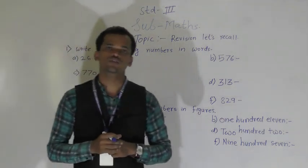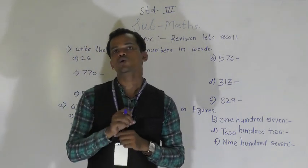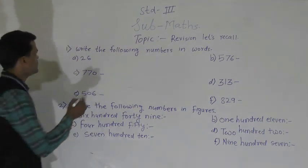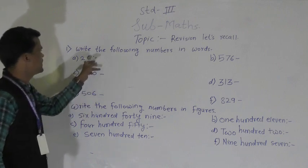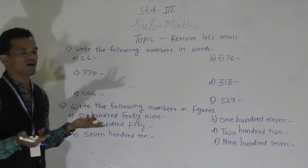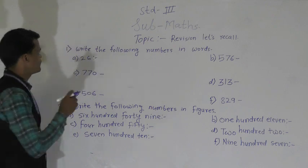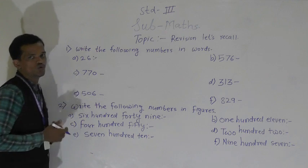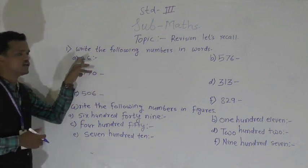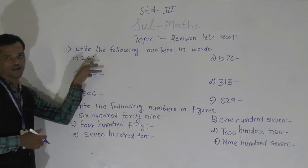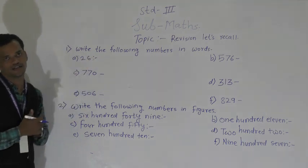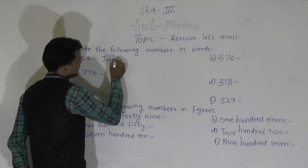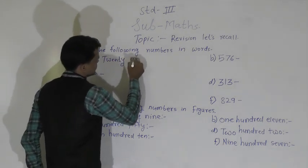The numbers are given in numerals and you have to write that number into words. So first number is 26. At the ones place, 6 is here, and at the tens place, 2 is here. So 2 tens means 20 and 6 ones. So write the spelling of this number: 26.